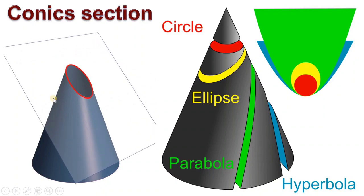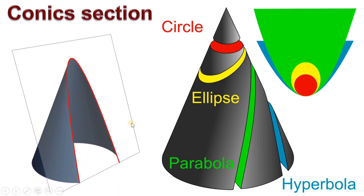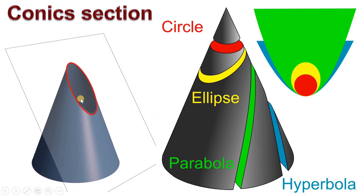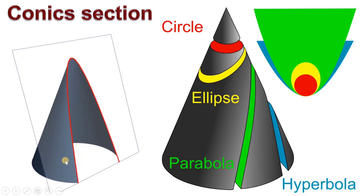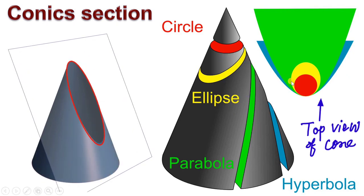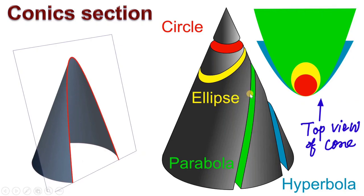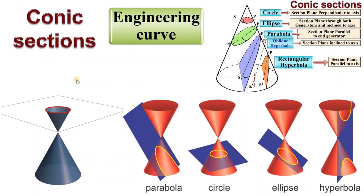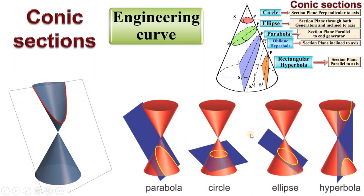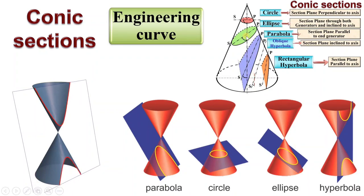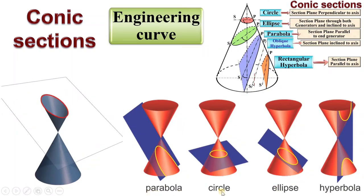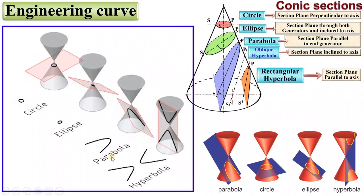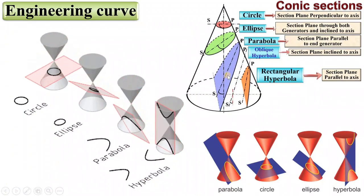Here you can also see the different engineering curves with respect to different positions of the cutting plane. Initially it is a circle, then ellipse, then parabola, and at last hyperbola. The circle is shown in red, ellipse in yellow, green represents parabola, and at last hyperbola. This is a very good animation to understand the different types of engineering curves in the conics group.